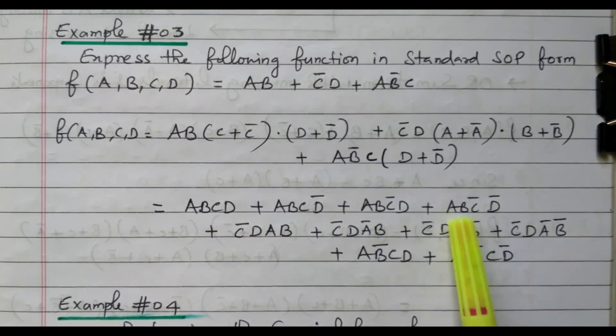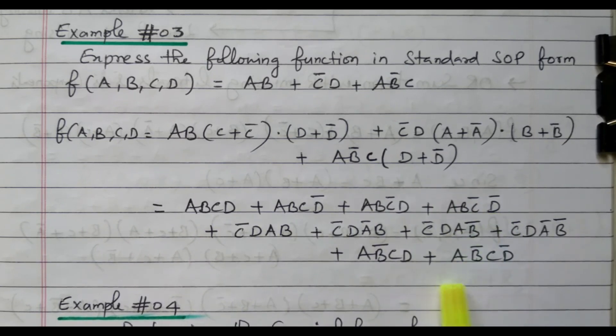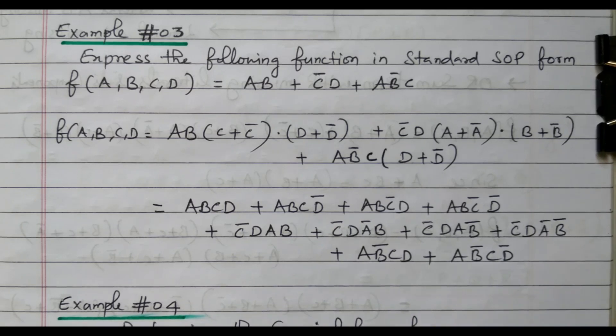All A, B, C, D — four literals are available in each product term. So that is called a standard SOP form. Now we will go to one more example.